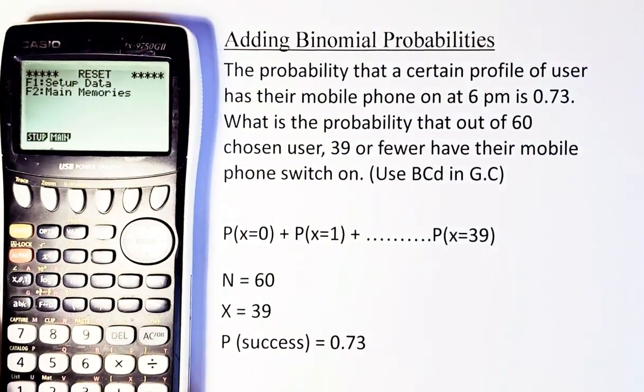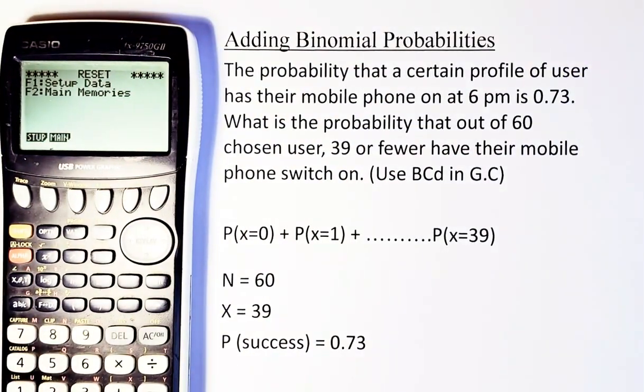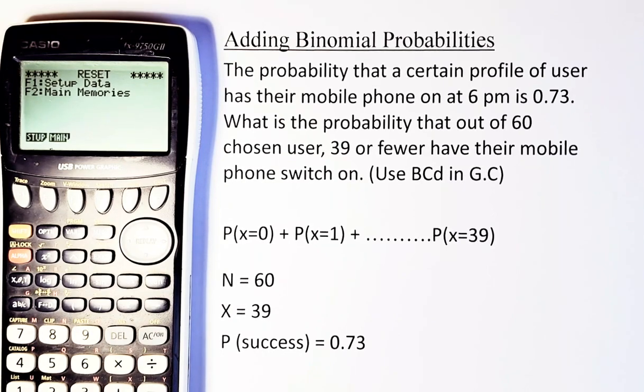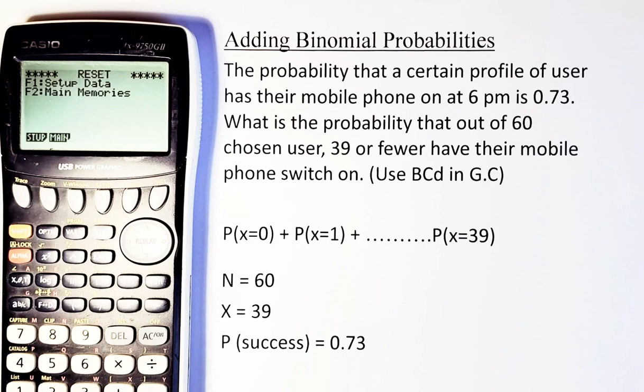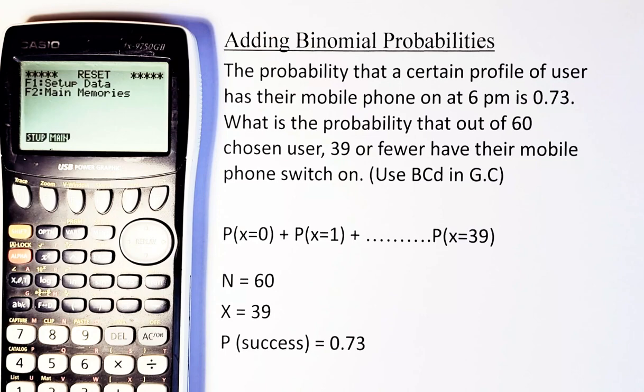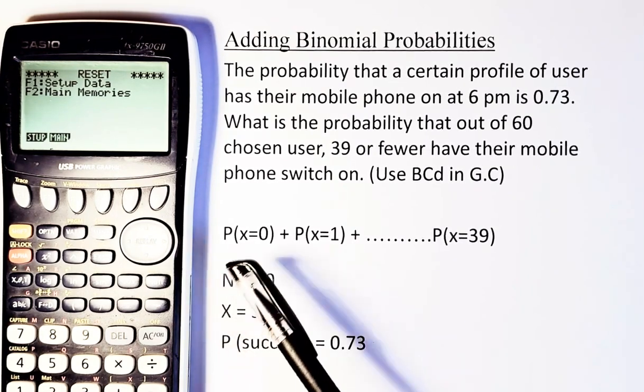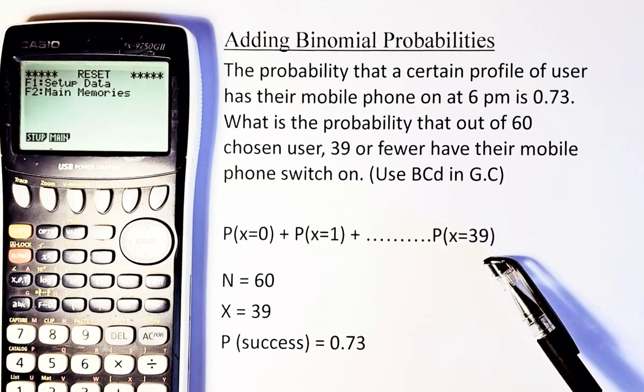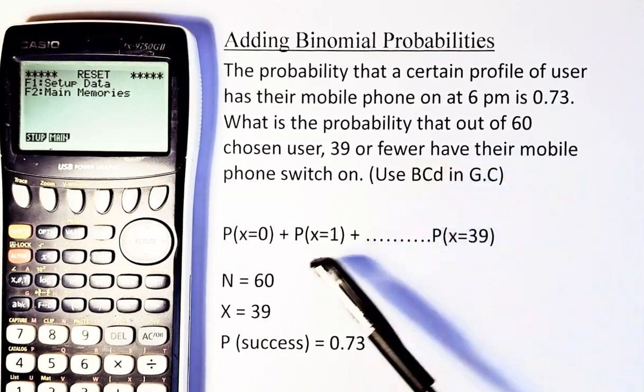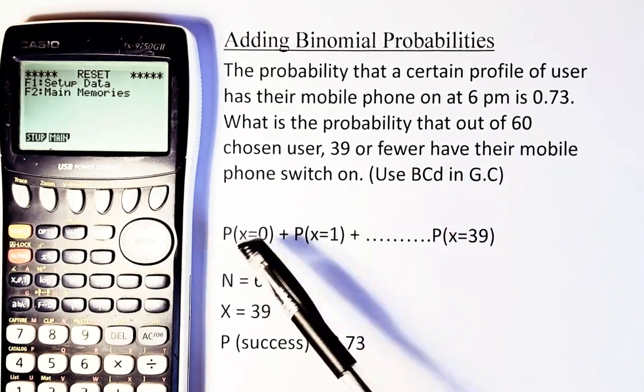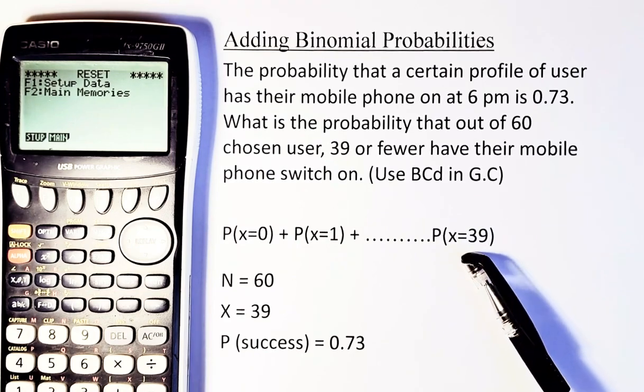Let's read the question now. The probability that a certain profile of user has their mobile phone on at 6 p.m. is 0.73. What is the probability that out of 60 chosen users, 39 or fewer have their mobile phone switched on? So now, you are going to calculate the probability between 0, 1, all the way to 39, because there are fewer than 39. So you calculate from 0 to 39.